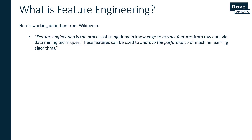Here's a working definition from Wikipedia about feature engineering. Feature engineering is the process of using domain knowledge to extract features from raw data via data mining techniques. These features can be used to improve the performance of machine learning algorithms. This is a great working definition.